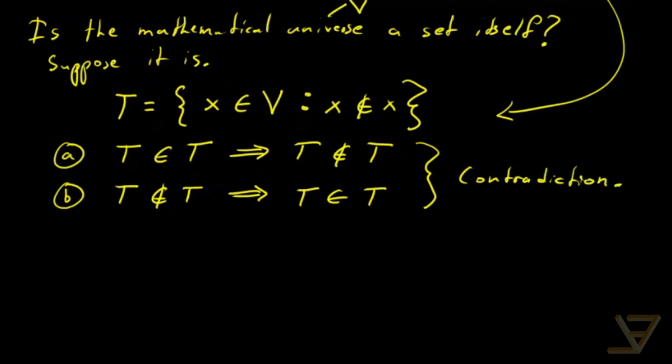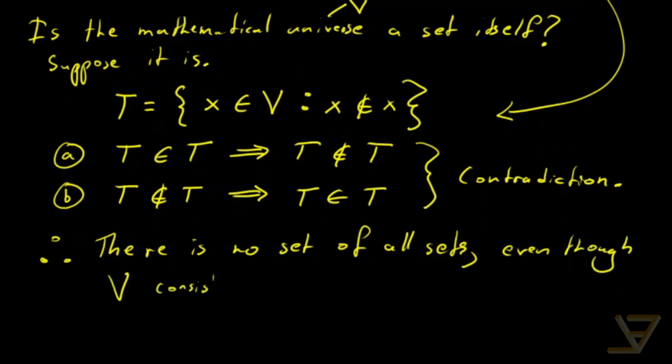For this reason, our second conclusion is there is no set of all sets, even though V consists of all sets. So, the mathematical universe consists of all possible sets, but it is not a set itself.